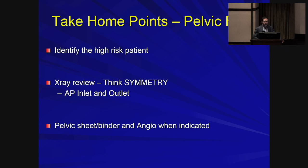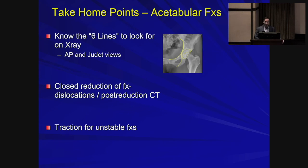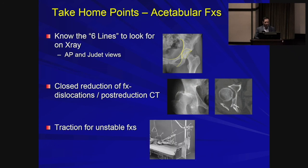Take-home points: For pelvic fractures — identify high-risk patients needing immediate resuscitation, apply a binder for appropriate fracture patterns (open book/APC subtypes), look for symmetry on x-rays to detect pelvic disruption, and know when to use a binder versus send to angio. For acetabular fractures — practice identifying the six lines on AP pelvis, get Judet views, obtain a post-reduction CT of any fracture-dislocation to rule out marginal impaction and intra-articular fragments, and apply traction for unstable fractures.